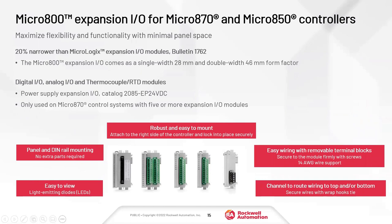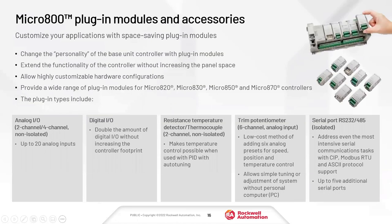As far as expansion IO goes, these are the IO cards that stack onto the end of the 850 and 870. There are lots of options — discrete, analog, thermocouple, RTD. You get much higher IO density with these expansion modules than with plugin modules. There's a large assortment of plugin modules too, and the 820, 850, and 870 all take the same plugin modules.